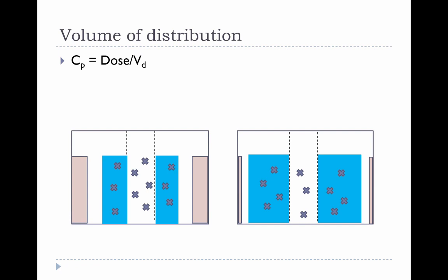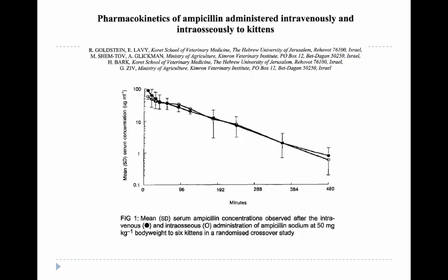Adding fat to the equation — represented by brown bars — there is more body fat in an adult than a neonate. If the Xs now represent a fat-soluble drug, they distribute into fat in both adult and neonate. In this case, the neonate has a higher plasma drug concentration because less of it can distribute out into fat compared to an adult. Taking ampicillin (water-soluble) and enrofloxacin (lipid-soluble) as examples helps illustrate these concepts.